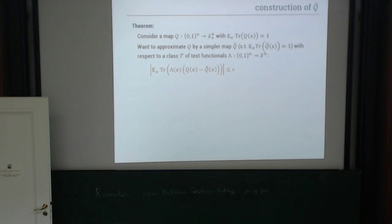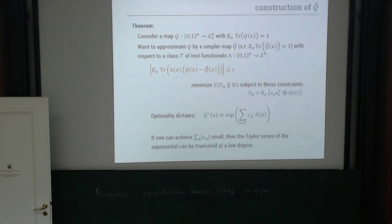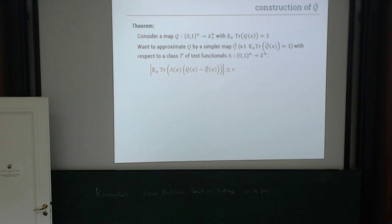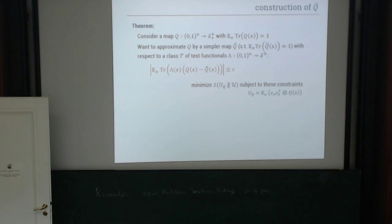We have only a few minutes left, so let me briefly describe how the approximation theorem itself is proved. We find Q-tilde by a convex program, minimizing over maps Q-tilde a quantity related to the von Neumann relative entropy. The structure of this optimization — minimizing a quantum entropy over low-degree constraints — is what enables the degree bound on R.